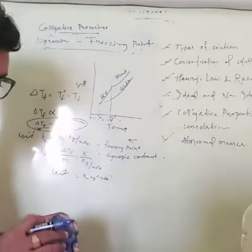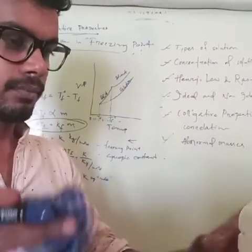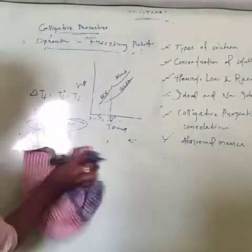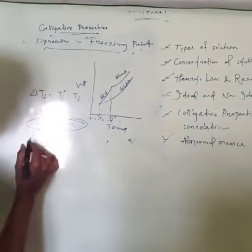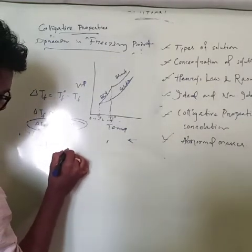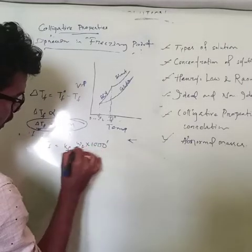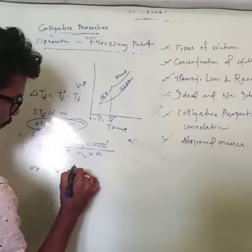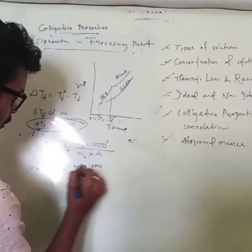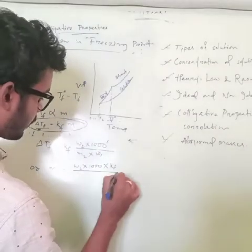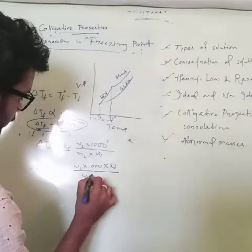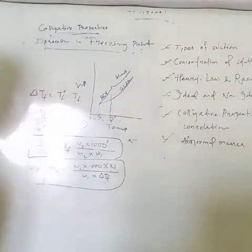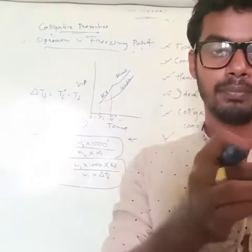The expanded formula is: ΔTf equals Kf into W₂ into 1000 divided by M₂ into W₁. Or, rearranging for M₂: M₂ equals W₂ into 1000 into Kf divided by W₁ into ΔTf. These are the equations you use to find the answer.